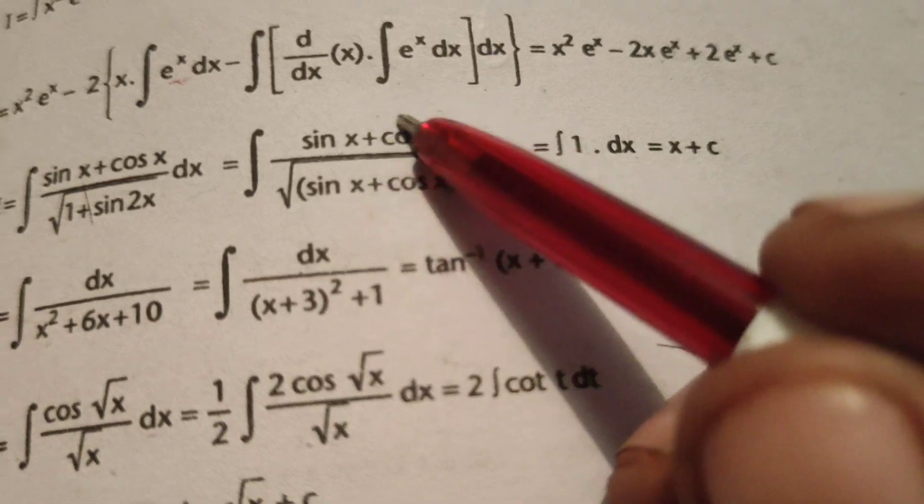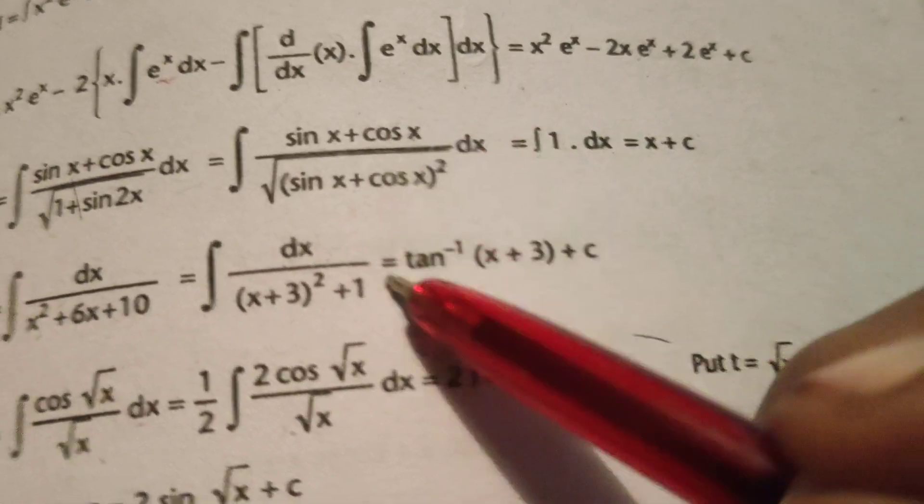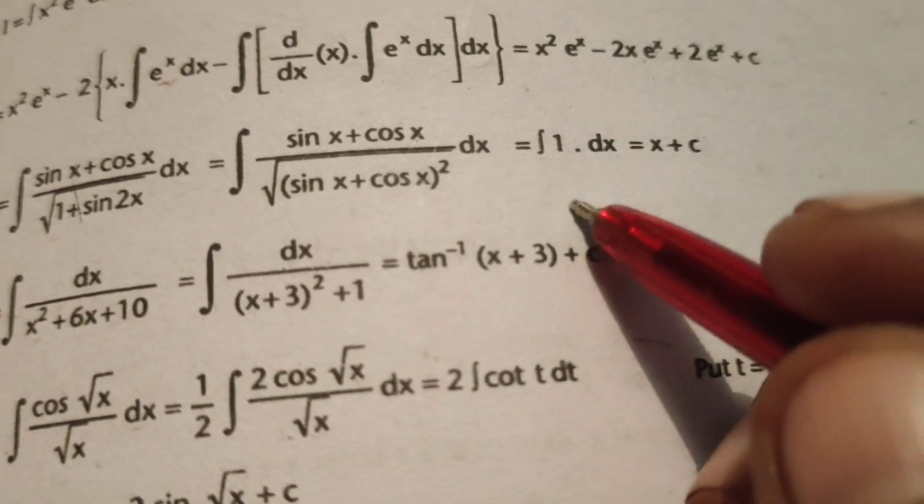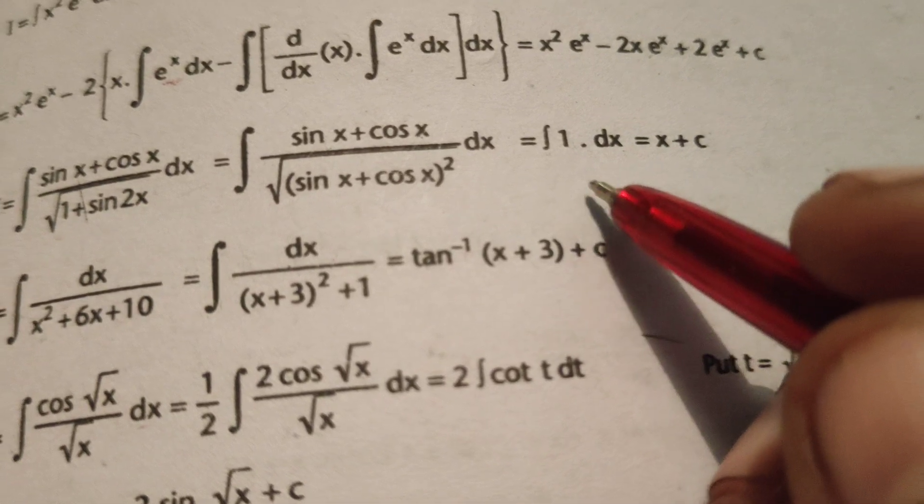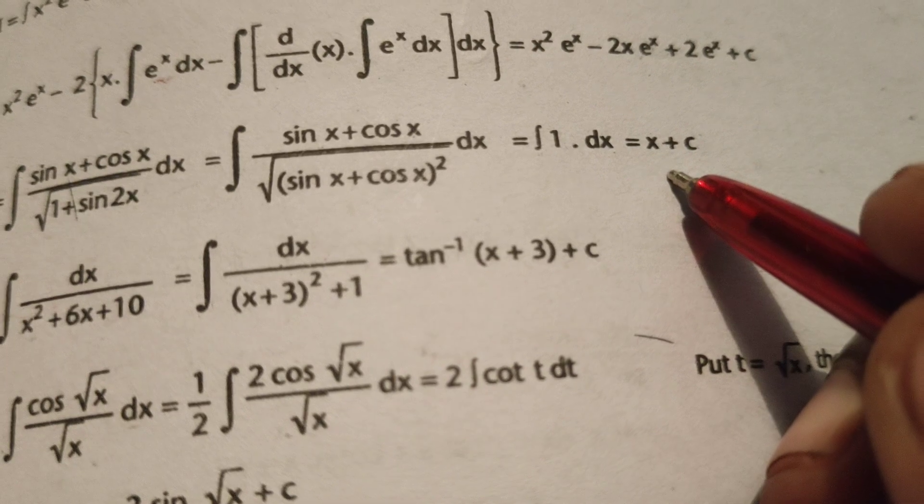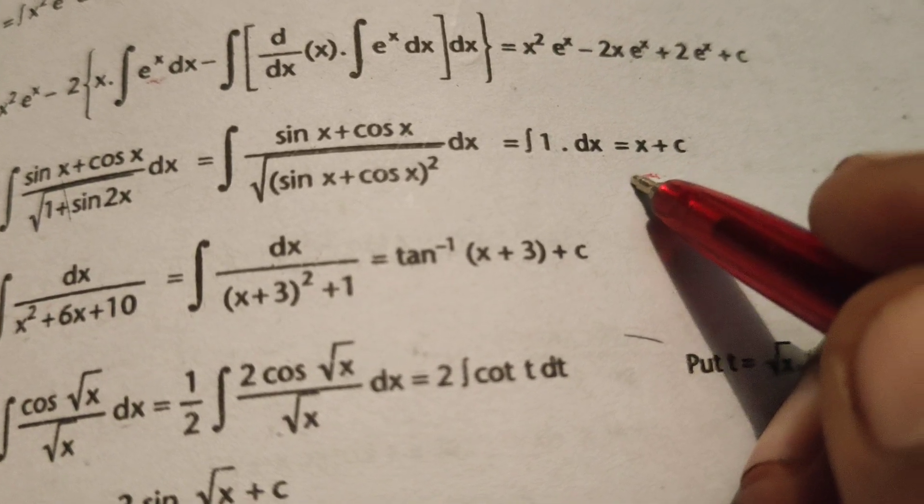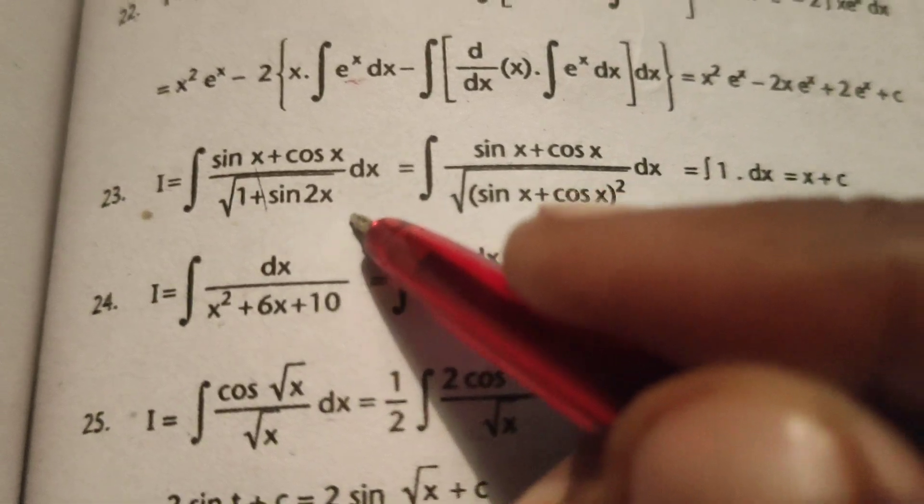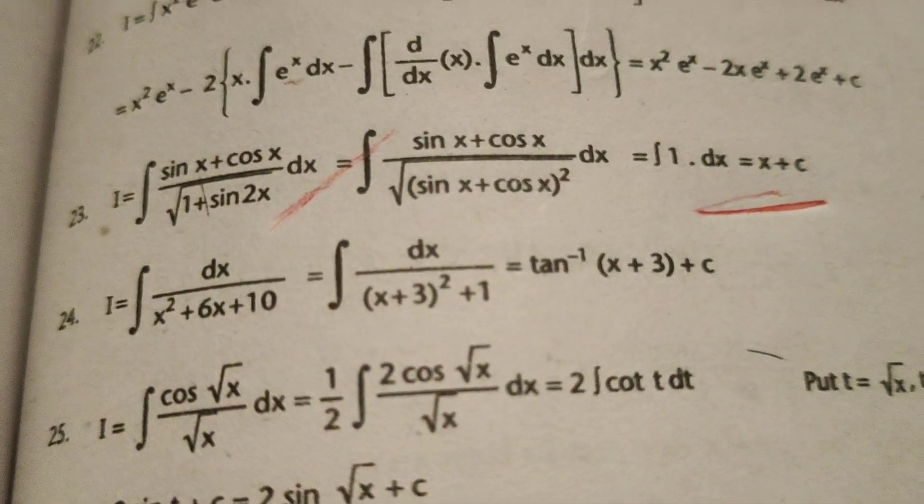The sin x + cos x in the numerator cancels with sin x + cos x in the denominator, leaving us with the integral of 1 dx. Integrating this gives x, and after adding the constant, we get x + c. This is the solution to this evaluated integral. Thank you!